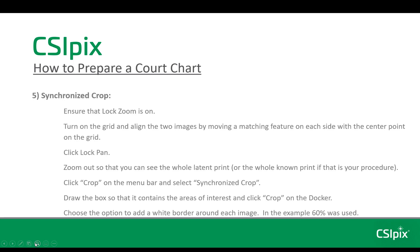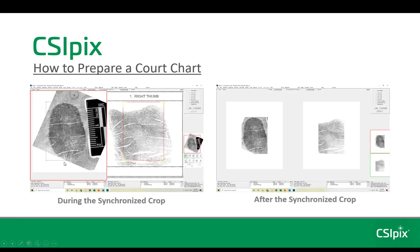The fifth step is the synchronized crop. Ensure that Lock Zoom is on. Turn on the grid and align the two images by moving a matching feature on each side to the center point on the grid, then click Lock Pan. At this point you can turn off the grid. Zoom out so you can see the whole latent print, or the whole known print if that's your procedure. Click Crop on the menu bar and select Synchronize Crop. Draw the box so that it contains the areas of interest and click Crop on the docker. You'll be asked if you want to add a white border around each image — set the percentage to 50 or 60 percent and click OK. This is the result after the synchronized crop: the two cropped images with the white border around each.